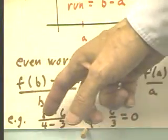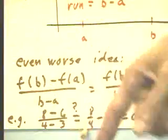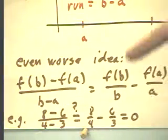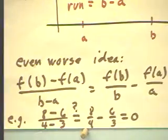But, clearly, 8 minus 6 is 2 and 4 minus 3 is 1 and we get 2, not 0. So, we see that there's something seriously wrong with that idea. So, we need to be careful.